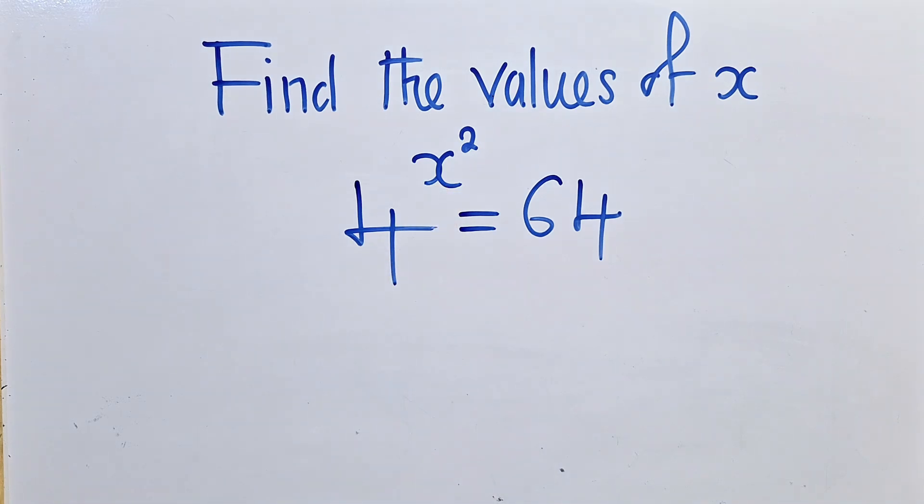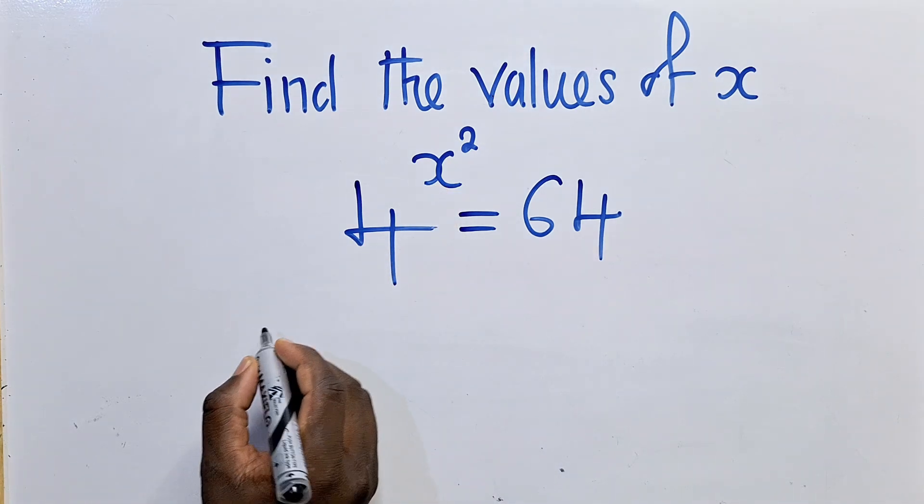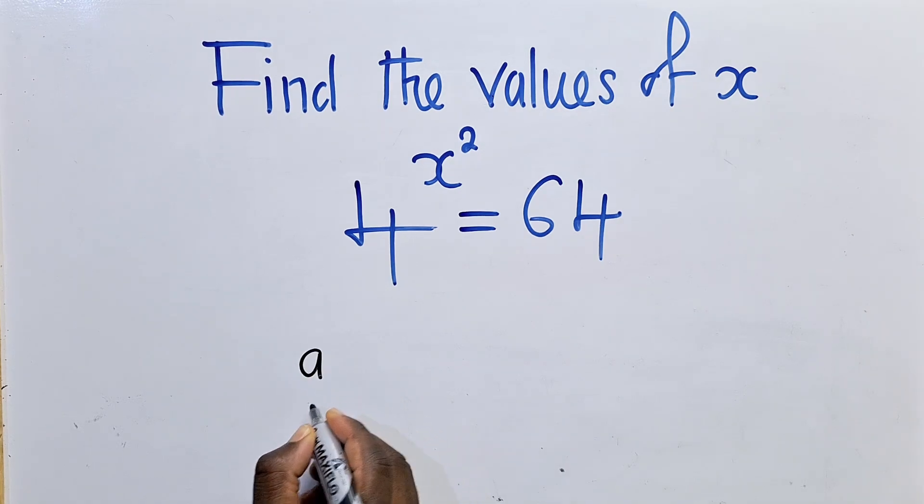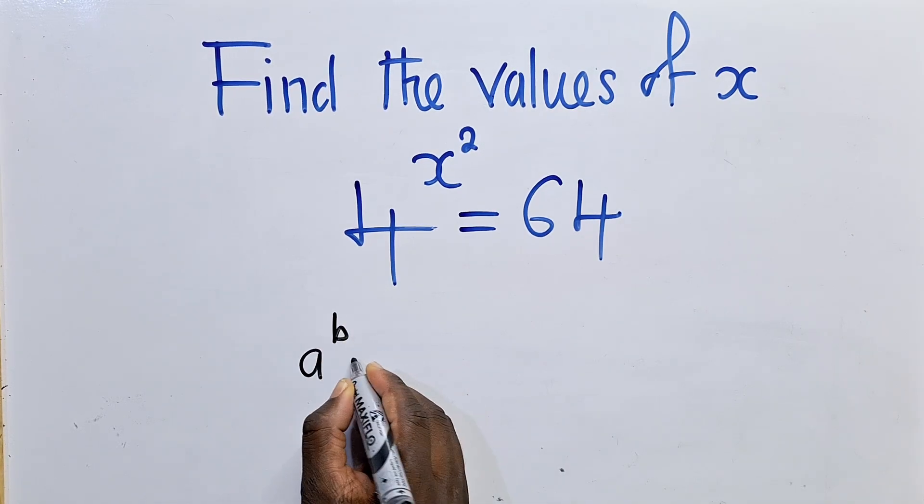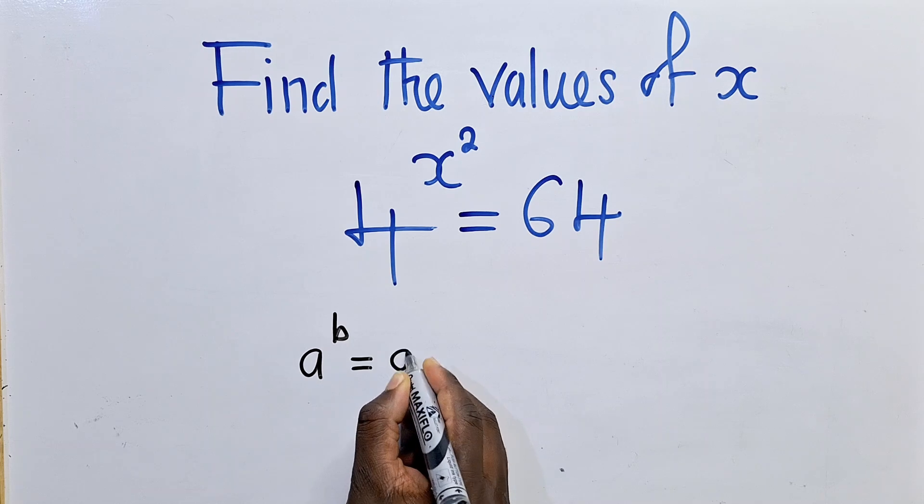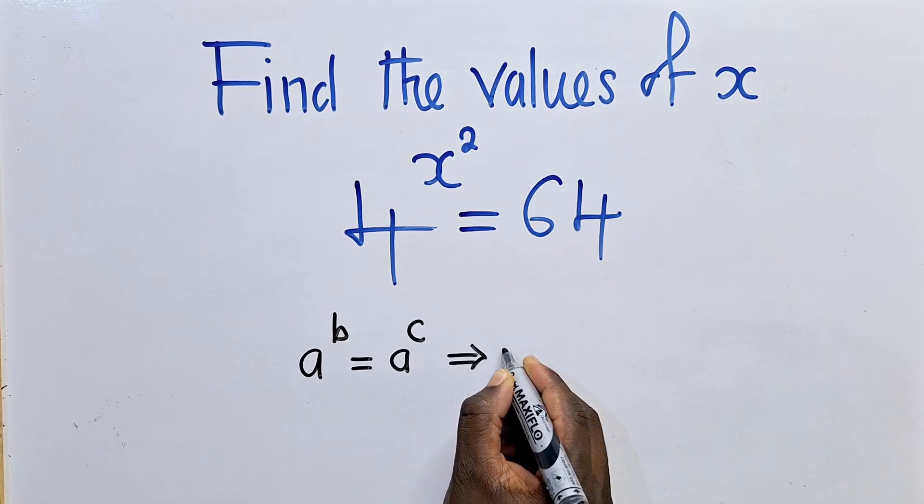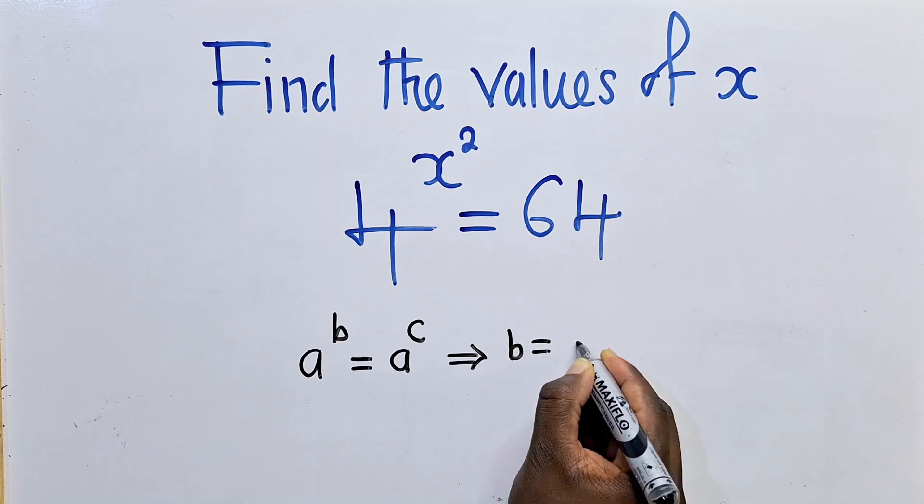The first thing that we need to do is to consider this property. So when you've got a power b is equal to a power c, this implies that b is equal to c.